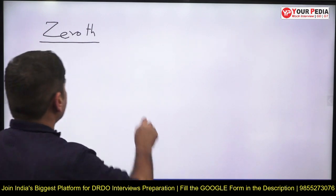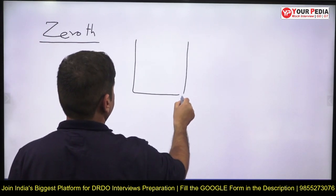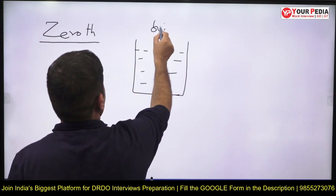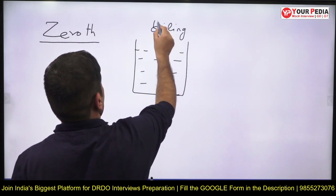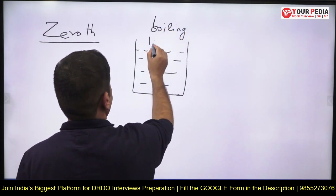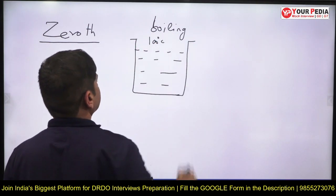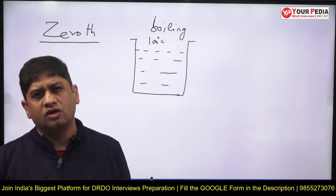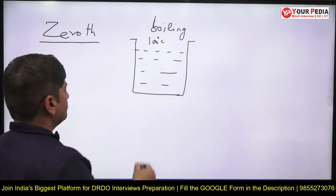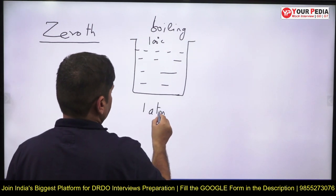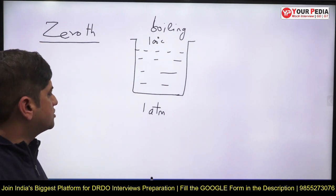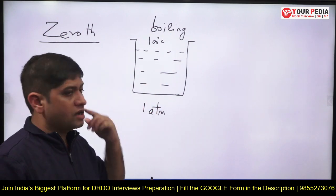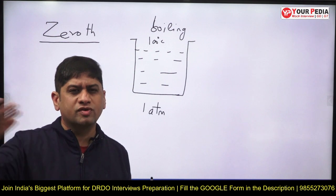Can you tell me with certainty that the temperature of this body is 100 degrees centigrade? Then it hits you — yes, sir, boiling of water takes place at 100 degrees centigrade. The next question comes: does water always boil at 100 degrees centigrade? You say yes, sir, but there is an assumption — the boiling of water takes place at 100 degrees centigrade only when the pressure is one atmosphere.